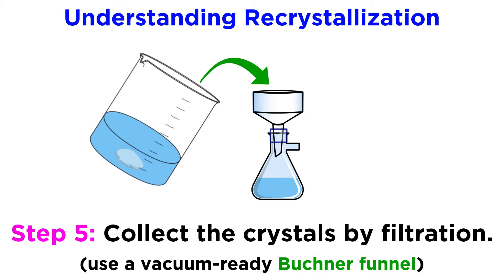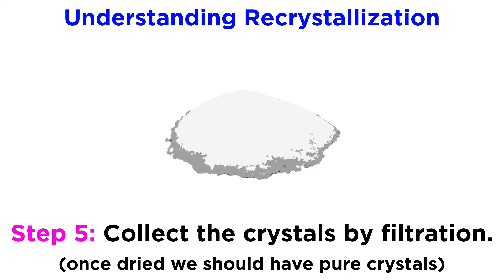Once crystallization is complete, we can use some filter paper on a Buechner funnel and dump the contents of the beaker onto the filter paper. Utilizing a vacuum, the solvent comes through the funnel, and the crystals will sit on top, slowly drying, and after sufficient time, we should have crystals that are nice and dry and pure.